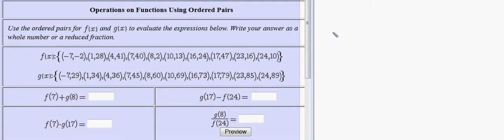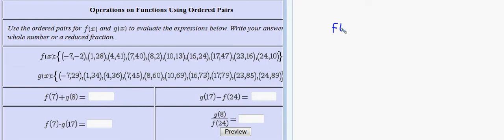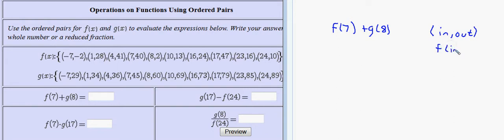So for example, our first question is to find f of 7 plus g of 8. Because f and g are given as a set of ordered pairs, let me remind you that in an ordered pair, the first coordinate is the input and the second is the output. With function notation, the input goes in the parentheses with the name of the function outside, and the output goes on the other side. That's the same for the function g — g of input equals output.